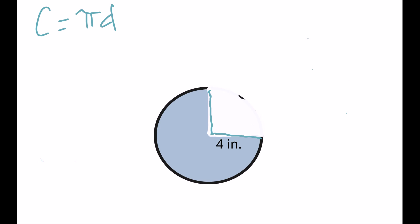So our circumference would be 3.14 times 8. And that's our diameter. So if this were a full circle, we would get 25.12 inches.